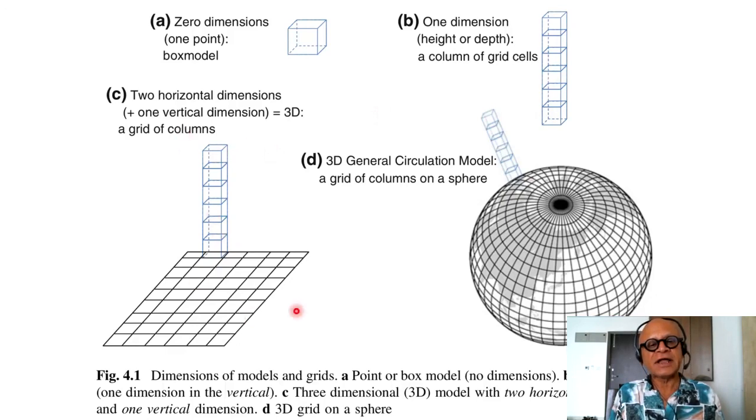Two dimensions: one vertical dimension and two horizontal dimensions plus one vertical dimension, so here you have a 3D, you can see the grid of columns here. The 3D general circulation model basically then goes onto a sphere or on a flat surface like this.